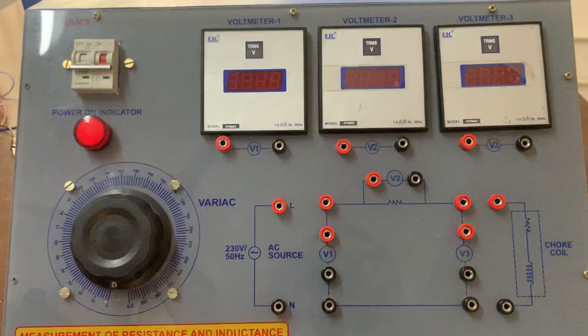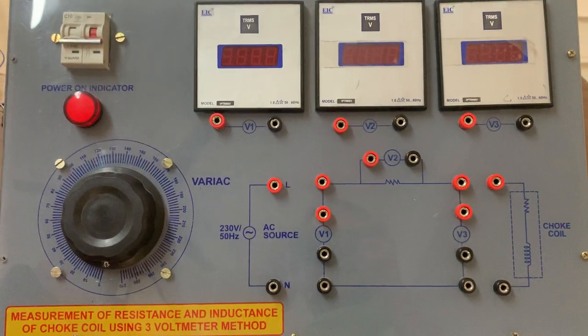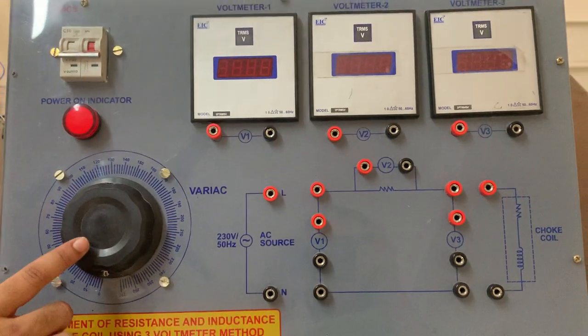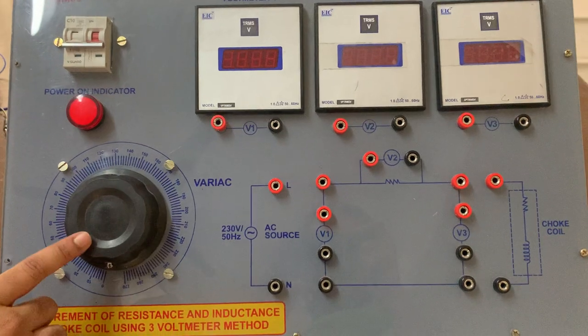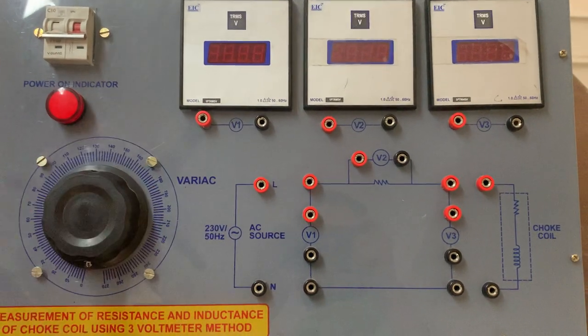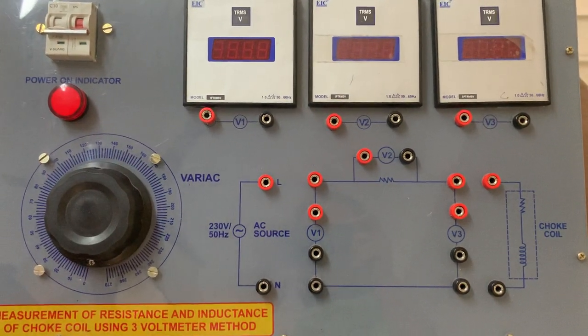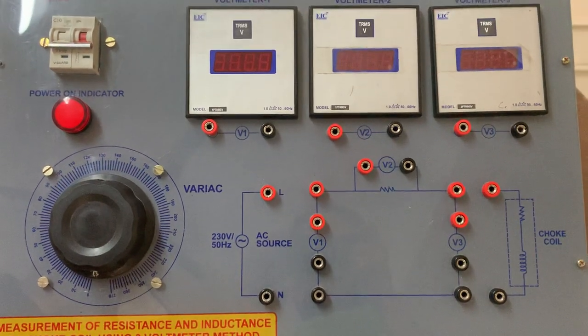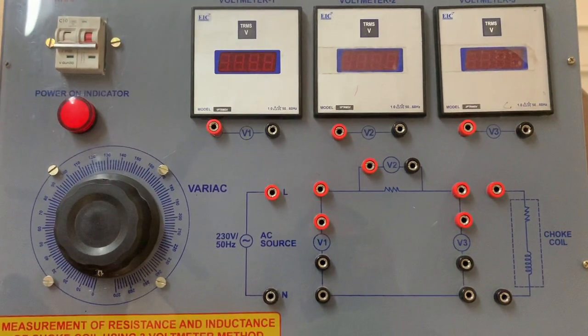Now we'll look at the trainer kit where we perform this experiment. In this trainer kit you can see we have an MCB switch, an autotransformer, and three voltmeters - voltmeter 1, 2, and 3. The autotransformer will be used to provide variable voltages.